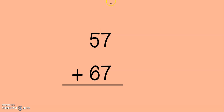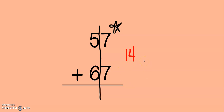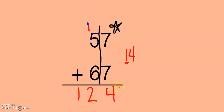Let's practice one last problem together today. First I start with my ones, and I have 7 plus 7. That's one of my doubles, isn't it? 7 plus 7 gives me 14. Does 14 have a 10? Yes, it does. So I put my new 10 at the top, and I pull my four ones down to the bottom. Now let's look in the tens place: 6, 7, 8, 9, 10, 11, 12. 12 tens — so what does that mean, second grade? I put the whole 12 down at the bottom, and I made a new hundred.